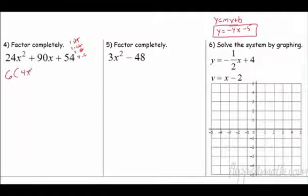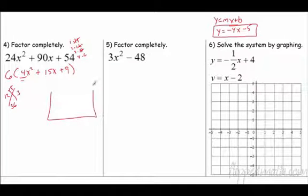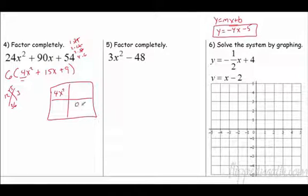So 4x squared, because 24 divided by 6 is 4. 90 divided by 6 is 15. And 54 divided by 6 is 9. Now I'm going to factor that. First times last is 36. And I need it to add to 15. Well, that's 12 times 3. And since there's a leading coefficient, I need to do the box, unless you know another method.